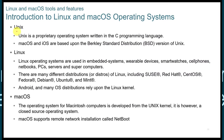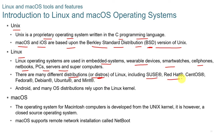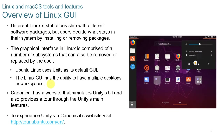Unix is a proprietary operating system written in the C programming language. Mac OS and iOS are based on the Berkeley Standard Distribution (BSD) version of Unix. Linux is used in embedded systems, wearable devices, smartwatches, cell phones, netbooks, PCs, and servers. There are many different distributions — or distros — of Linux, including SUSE, Red Hat, CentOS, Fedora, Debian, Ubuntu, and Mint. Android and many other operating systems rely heavily on the Linux kernel. The Mac operating system is developed from the Unix kernel, making all these operating systems cousins of each other. Mac OS is a closed source operating system and supports remote network installation called NetBoot.